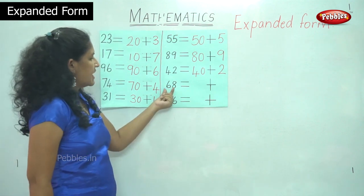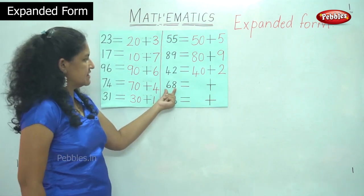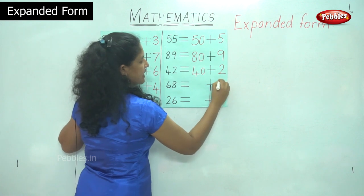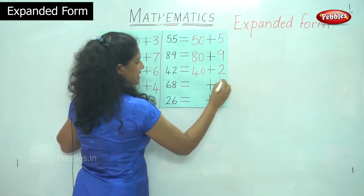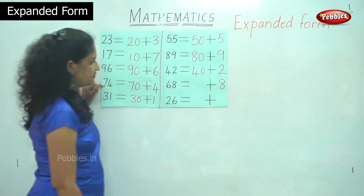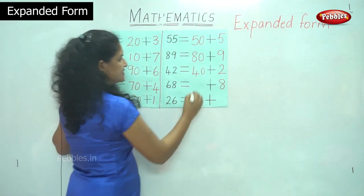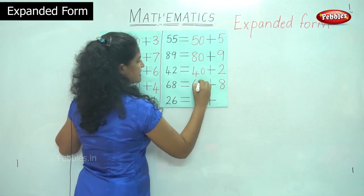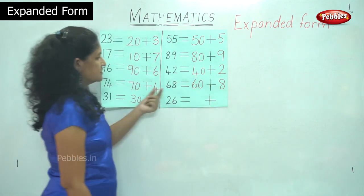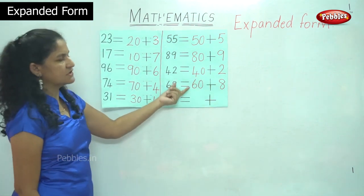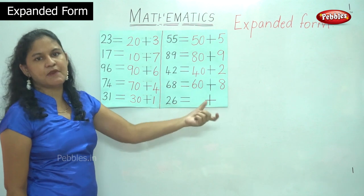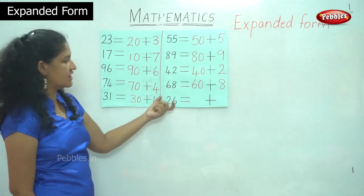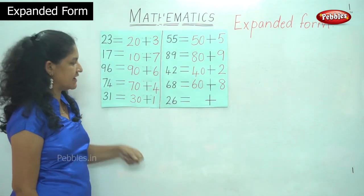The next number is 68. In the ones place I have 8 ones, and in the tens place it is 6 tens or 60. So 68 is equal to 60 plus 8. This is the expanded form of the number 68.